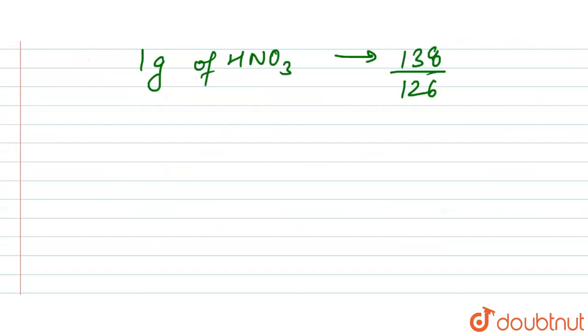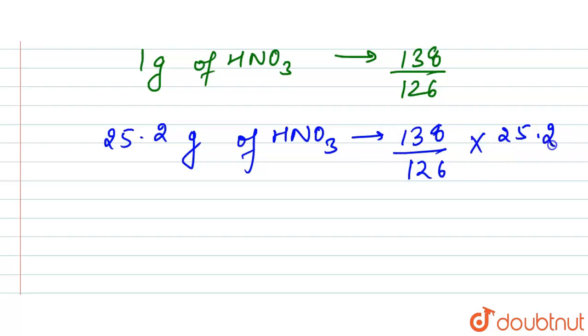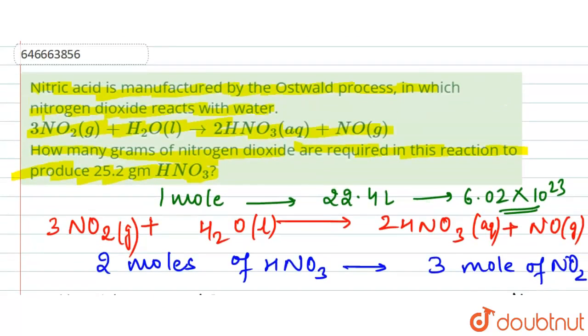This equals 27.6 grams of NO2. This means that to produce 25.2 grams of HNO3, we require 27.6 grams of NO2. Our answer is 27.6 grams. Thank you.